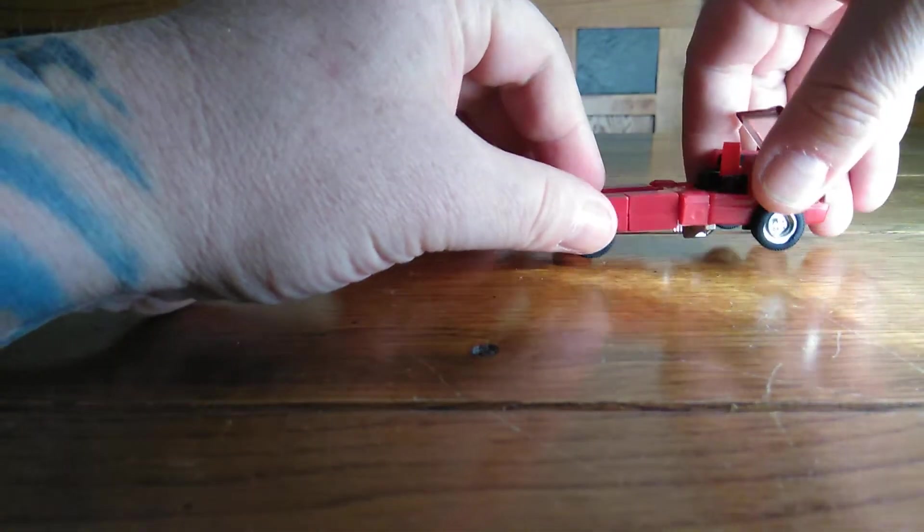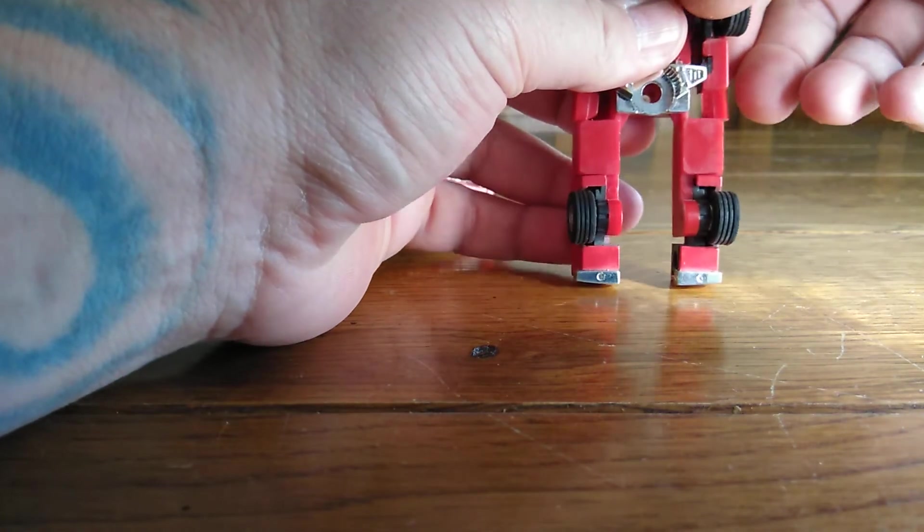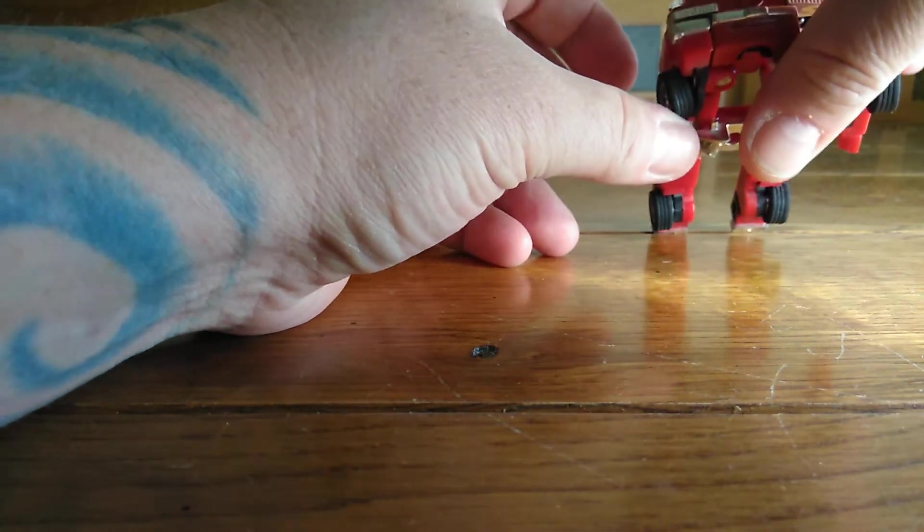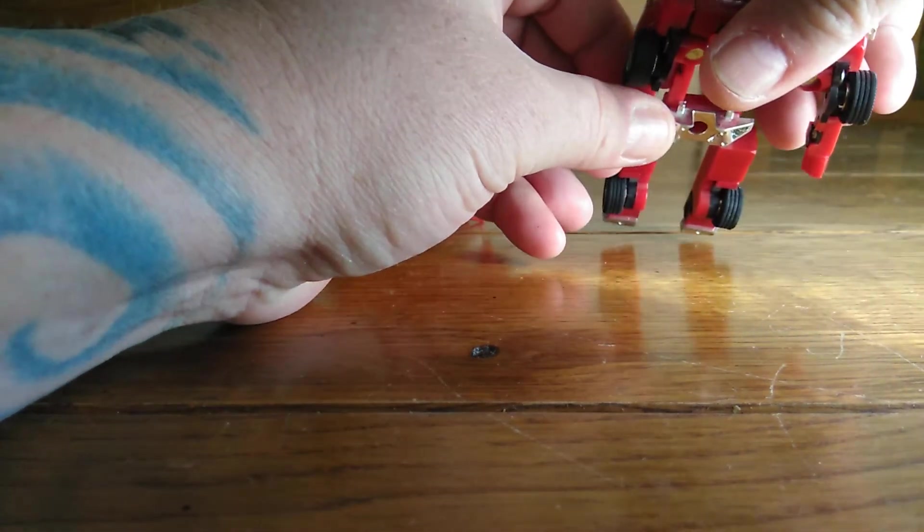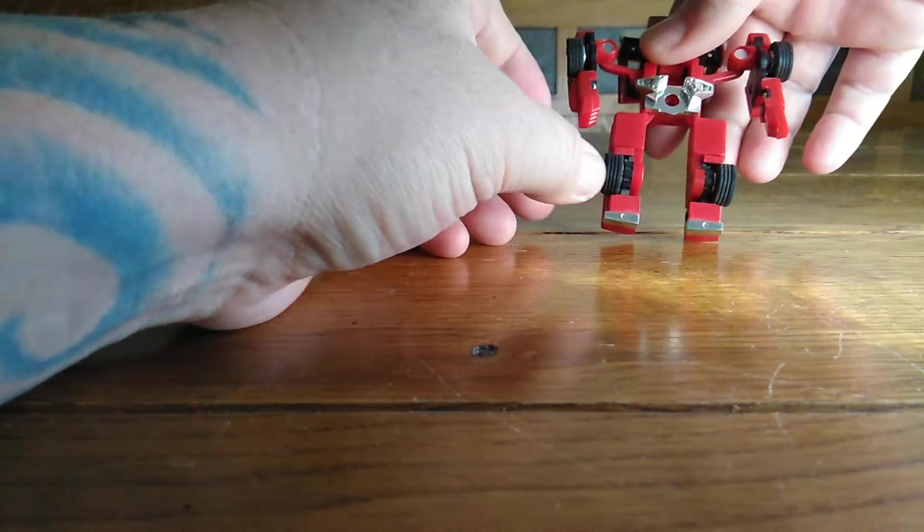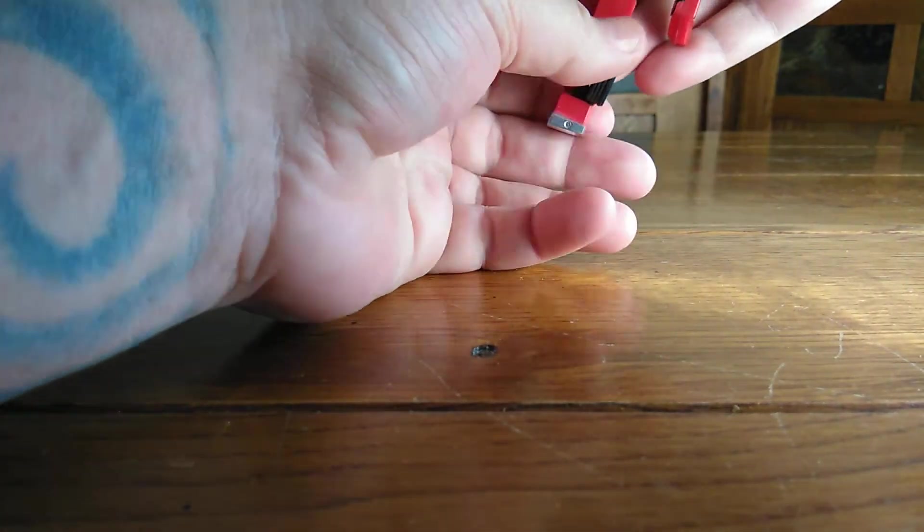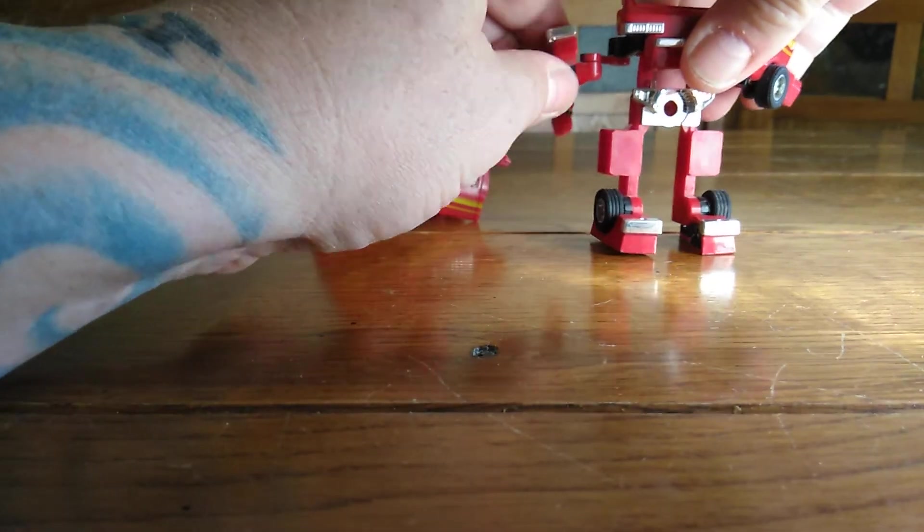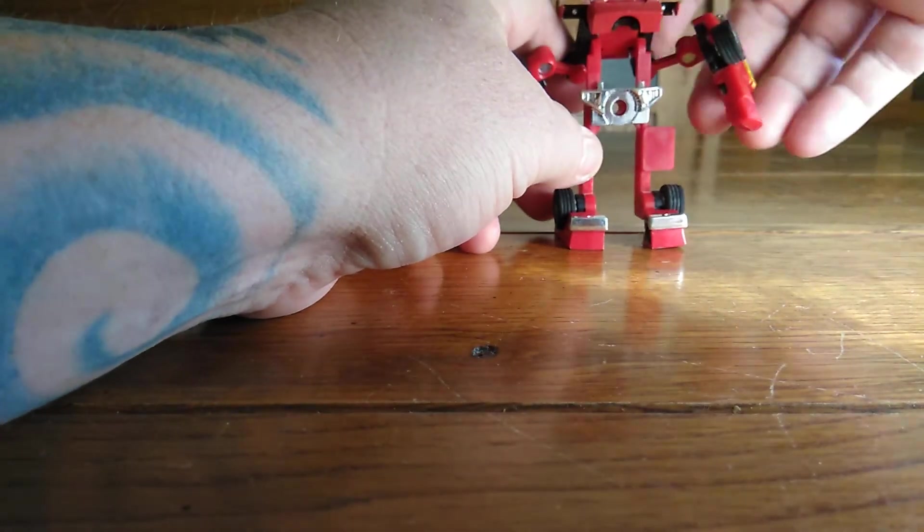You're going to flip the legs down or the arms out first. Excuse me, like so. Like that. There. And then you're going to flip the legs down and the feet up. So you have a little robot guy again.